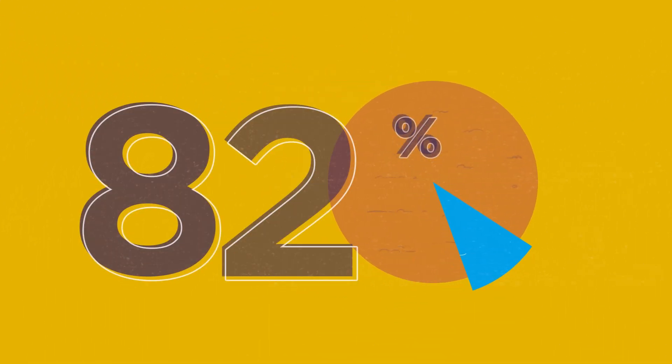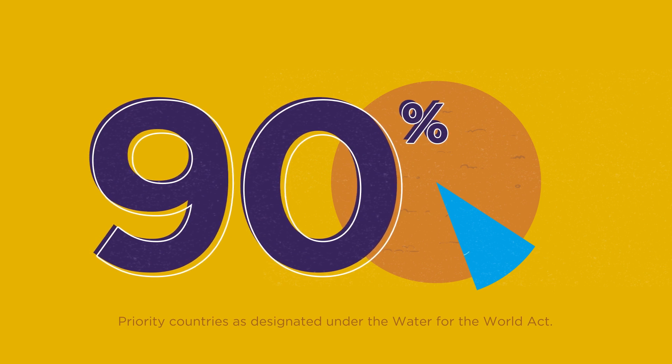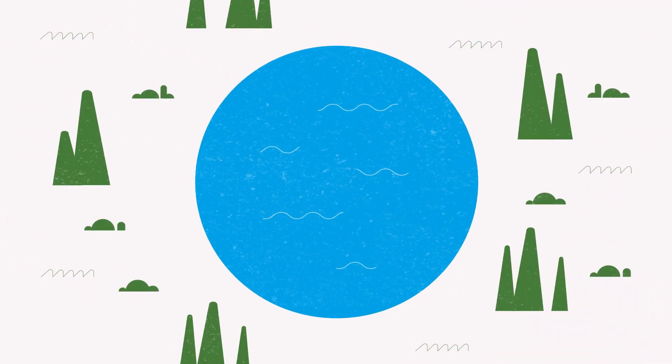In fact, over 90% of USAID's water priority countries are fragile or affected by conflict. In these cases, water can be part of the problem, but it can also be part of the solution.